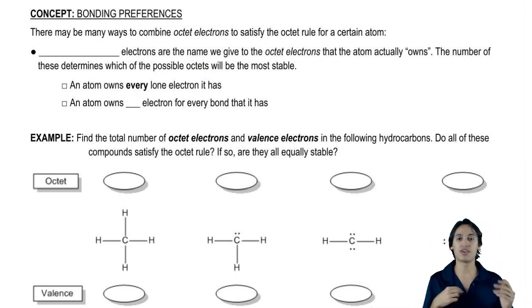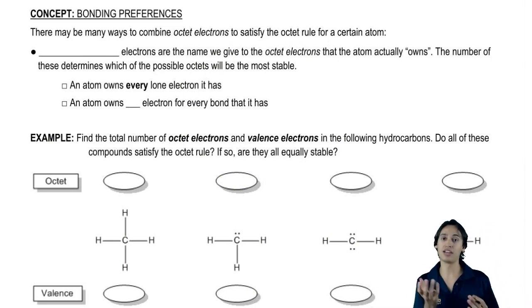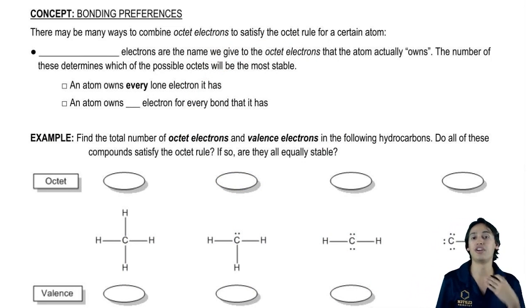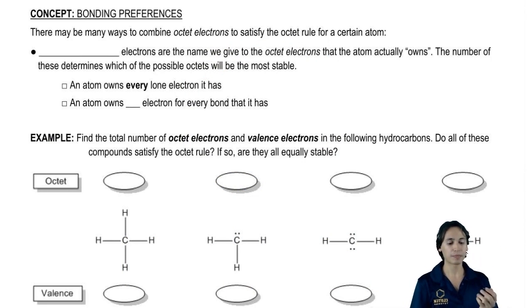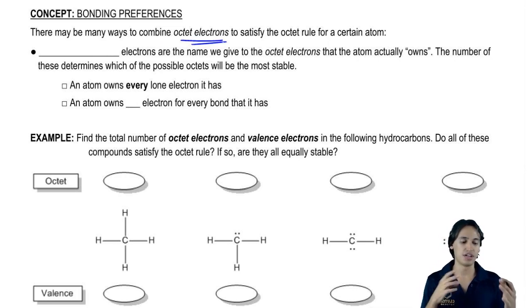So bonding preferences are based on the concept of octet electrons but also based on another type of electron. So let's talk about it. It turns out that there are actually several ways to combine octet electrons in order to satisfy the octet rule for an atom.